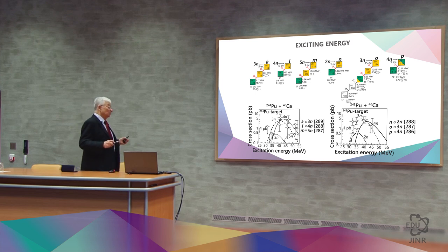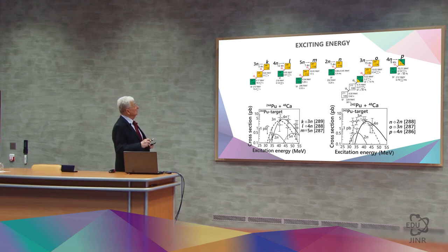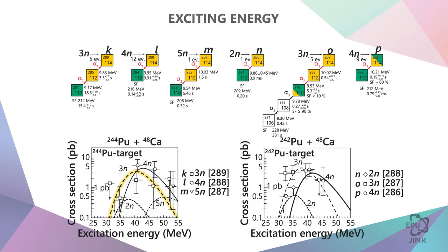For each of them, you can calculate what this dependent should look like if it is a product of evaporation from a compound nucleus of three, four or five neutrons. This is what three neutron emissions should look like, this is four neutron emissions, and this is five neutron emissions. This is what two neutron emissions should look like.